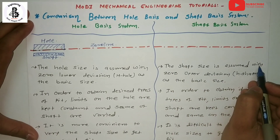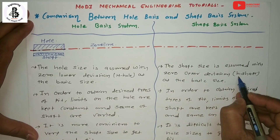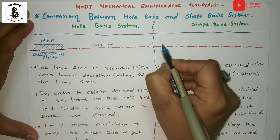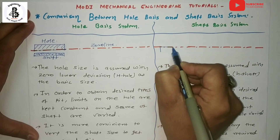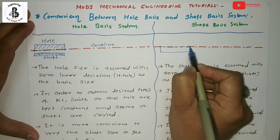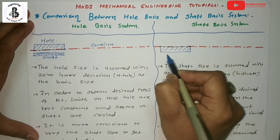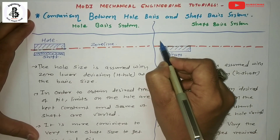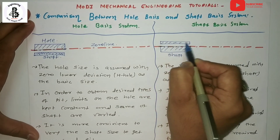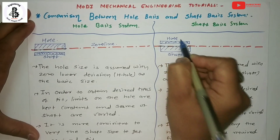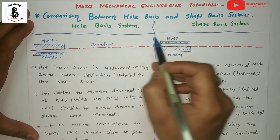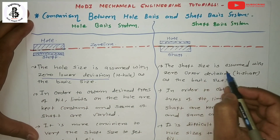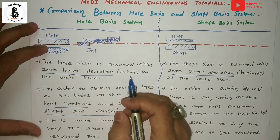For the shaft basis system, the shaft size is assumed with zero upper deviations — you can say small h shaft is the basic size. In the shaft basis system, the upper deviation is at the upper part. So the two key differences are: hole size is assumed with zero lower deviations, and shaft size is assumed with zero upper deviations.